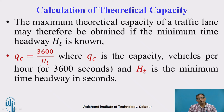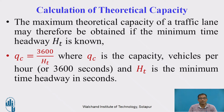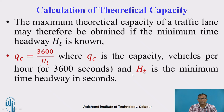When headway is expressed in time, the theoretical capacity is QC = 3600 / ht, where 3600 represents one hour in seconds and ht is the minimum time headway in seconds. Headway is the distance from the front of one vehicle to the front of the next, measured in both distance and time.